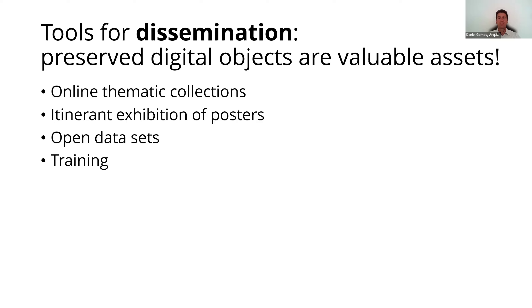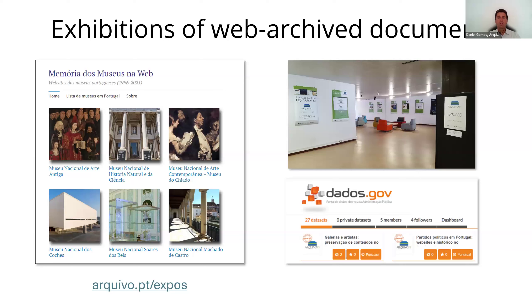Disseminating preserved digital objects is crucial to demonstrate the value of digital preservation. Thus, the Archive.pt catalog includes dissemination tools. For example, we support the creation of thematic exhibitions documented through web archived documents and publish the derived research datasets.